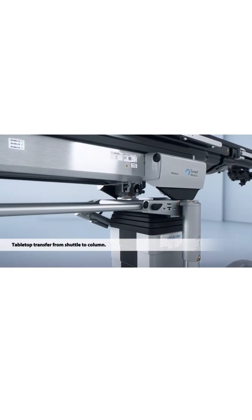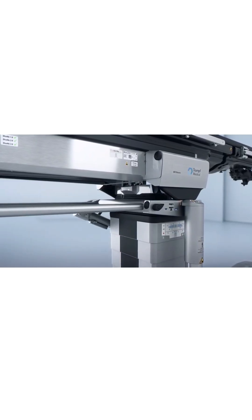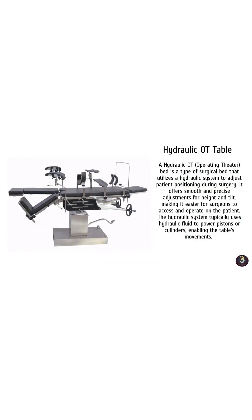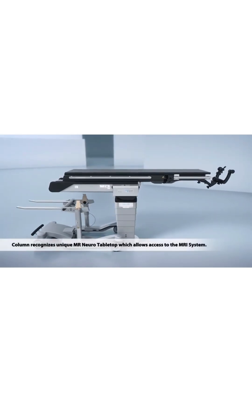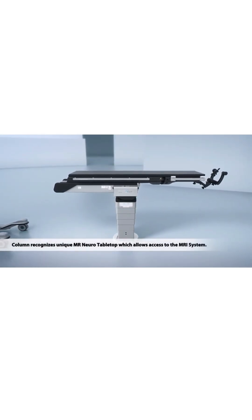The third is the hydraulic OT bed. These beds use a hydraulic system to adjust the bed's height and position. Though it doesn't have as many electronic controls as the electric bed, it's highly durable and often used in more rugged settings or where electrical power might be unreliable.